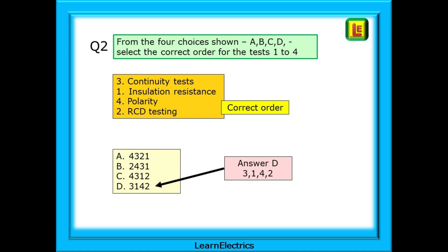This is the correct order for the four tests, and we should choose answer D. That gives us 3, 1, 4, 2.